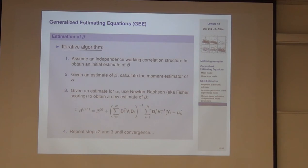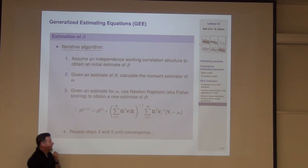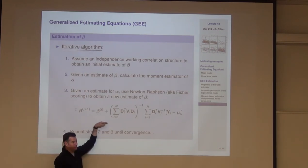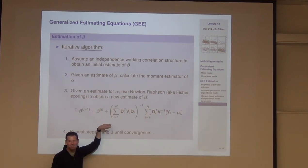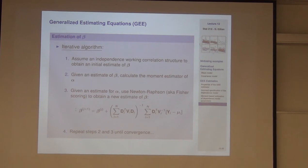The iterative algorithm is equivalent to Fisher scoring, as Liang and Zeger showed. The whole thing should look familiar — go back to the univariate case from the earlier course, then just change y to a vector, D to a matrix, V_i to a matrix, and you get the same result.